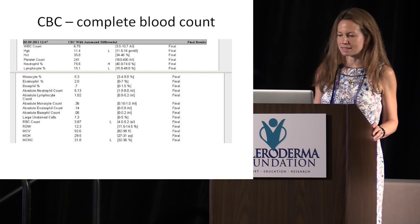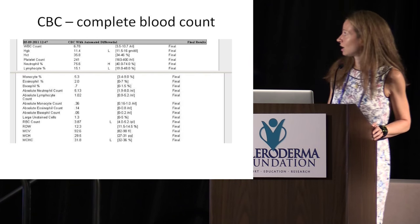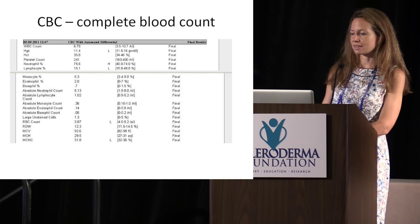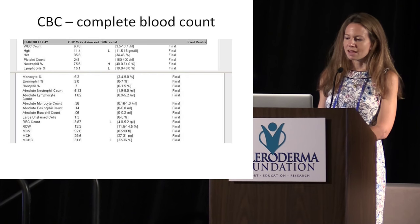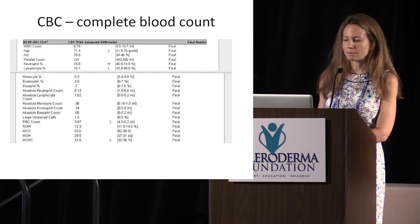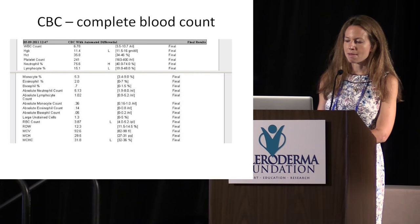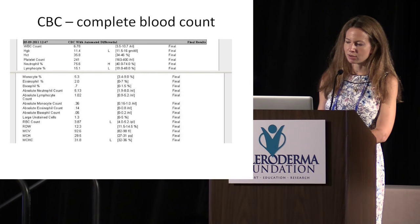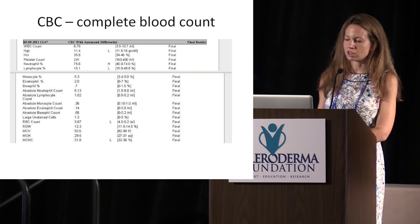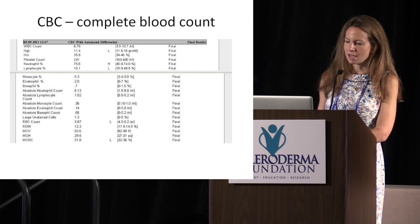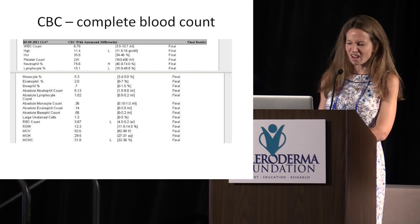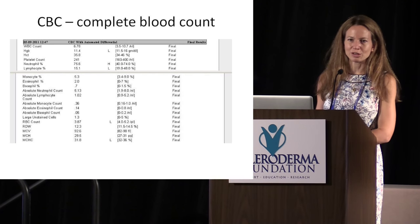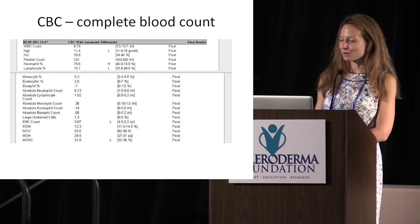One basic lab is a CBC, or complete blood count. This is a printout from one of my patient's labs. You get a WBC or white blood cell count, a hemoglobin, a hematocrit, and a platelet count. In this patient, she had a normal white blood cell count, her hemoglobin is a tiny bit low — meaning she has mild anemia — and her platelet count is normal. This gives me a sense of how she's doing.